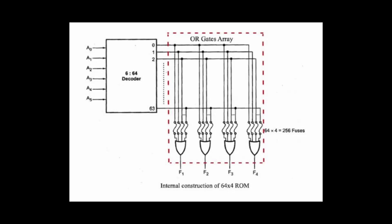The internal structure of ROM comprises two basic components: a decoder and OR gates. A decoder is a circuit that decodes an encoded form, such as binary coded decimal, to a decimal form. So the input is in binary form and the output is its decimal equivalent. All the OR gates present in the ROM will have the outputs of the decoder as their input. Let's take an example of a 64×4 ROM. The structure is shown in the following image.